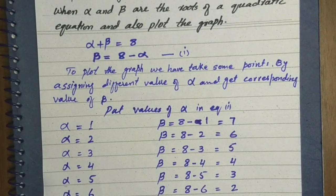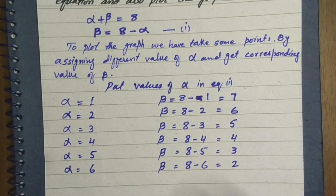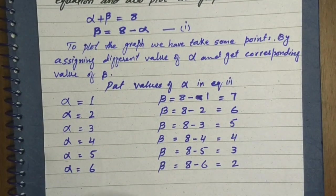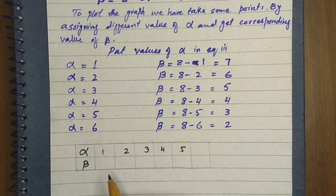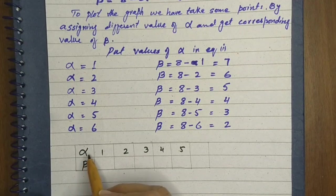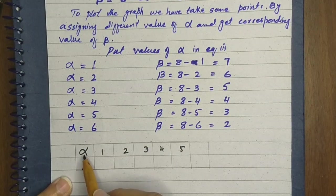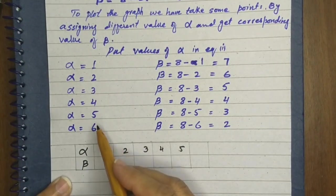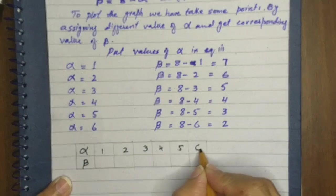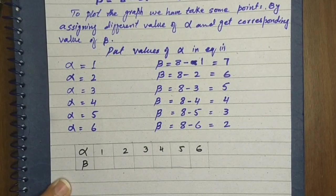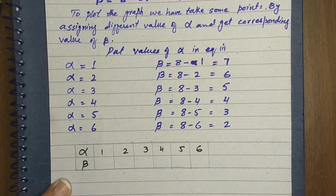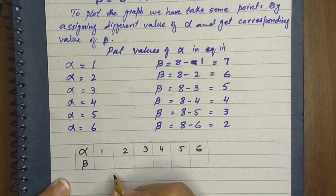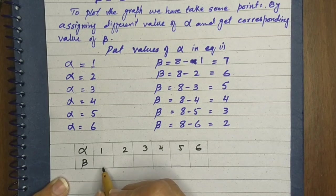We will take values like this. We have found beta and now we will make a table for this. We make a table for alpha and beta. Alpha takes values 1, 2, 3, 4, 5, 6. We have taken 6 values for alpha — we can also take negative or decimal values.